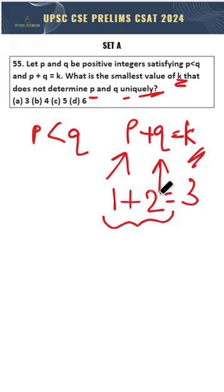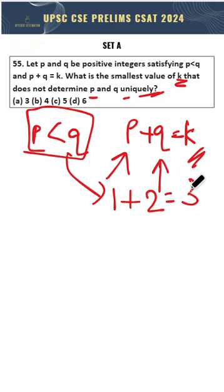But then I cannot choose any other pair for p and q. I cannot do 2 and 2 or anything other than 1 and 2. And they have explicitly said that p is lesser than q. So this is the only statement that satisfies. Therefore, we cannot consider this condition.